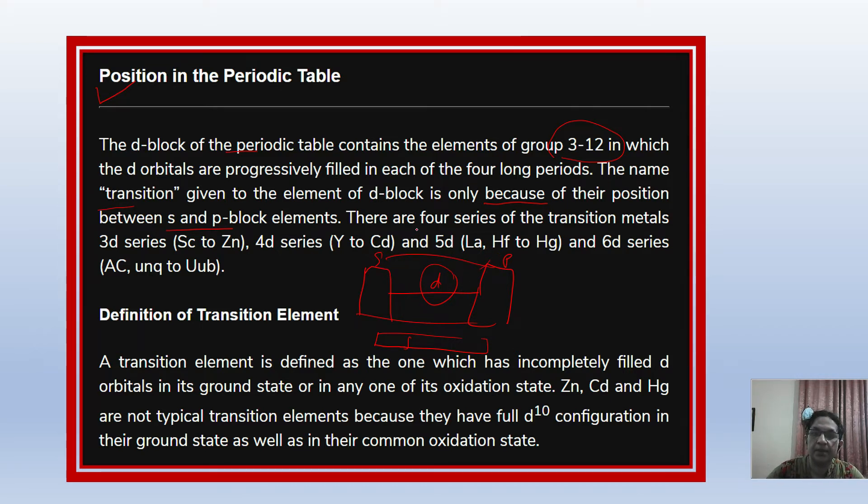There are four series. 3D series from Scandium to Zinc, 4D series from Yttrium to Cadmium, 5D series from Lanthanum and Hafnium to Mercury, and 6D series from Actinium to Unnilquadium and Unnilpentium. The 6D series contains artificially prepared elements. So these are the four transition series.